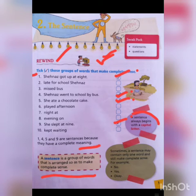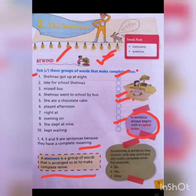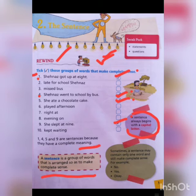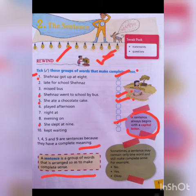A sentence always begins with a capital letter. As you can see, in the first sentence 'Shahnaz' starts with a capital S. In the fourth sentence, 'Shahnaz' also starts with a capital S. In the ninth sentence, 'She' also starts with a capital S. So, sentences always start with a capital letter.